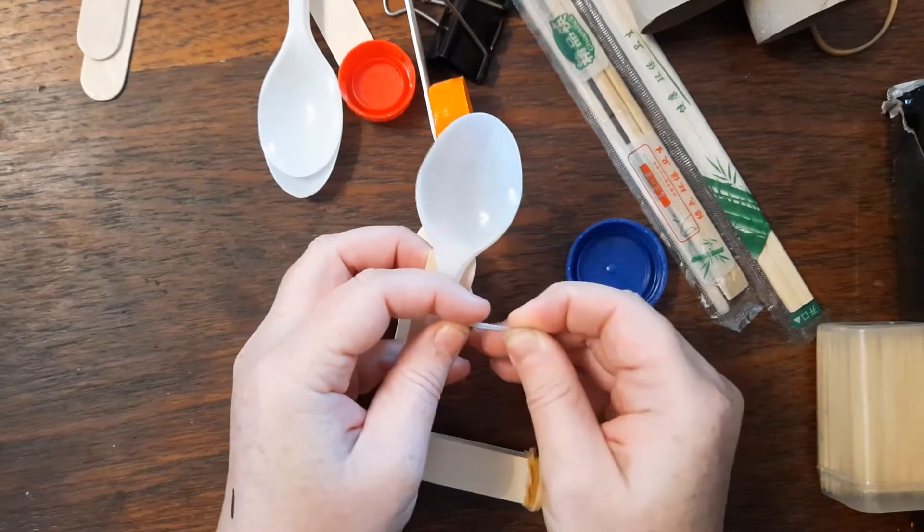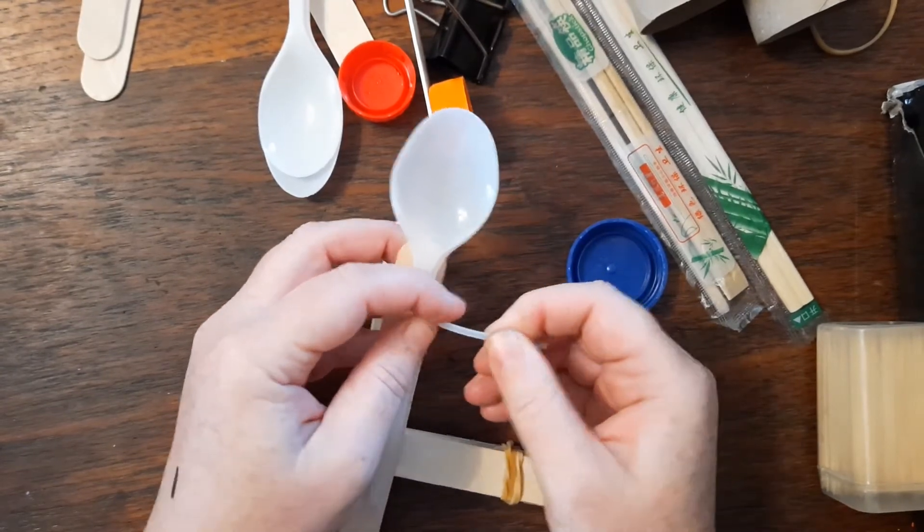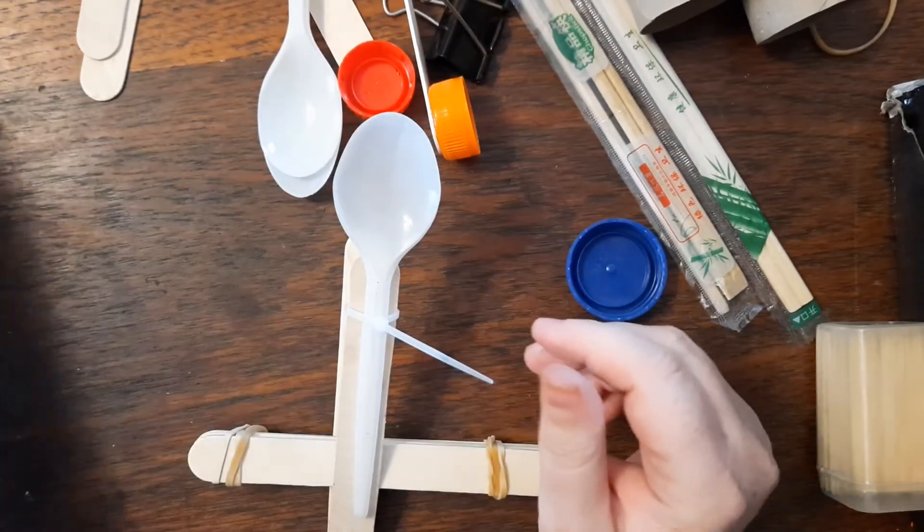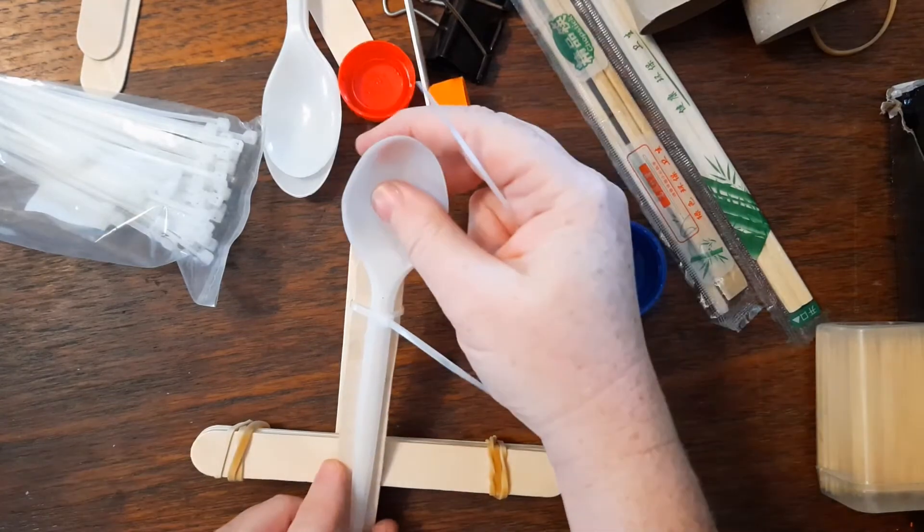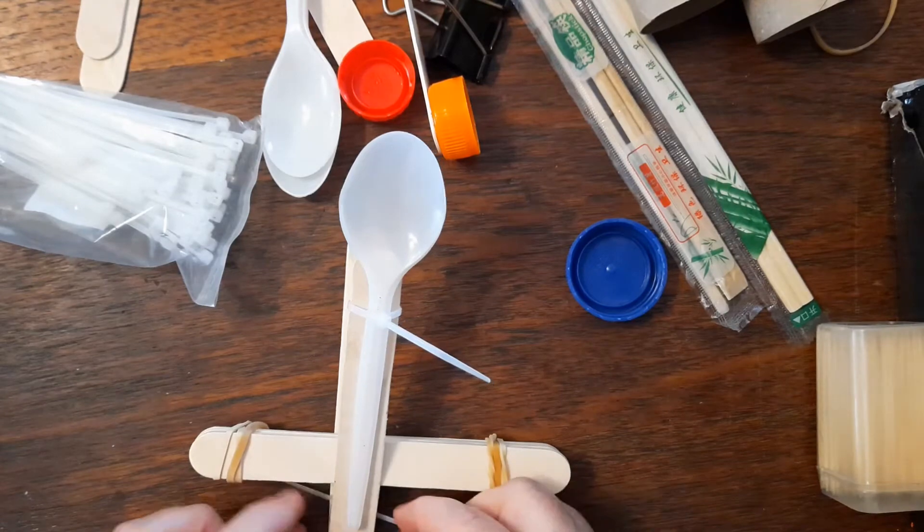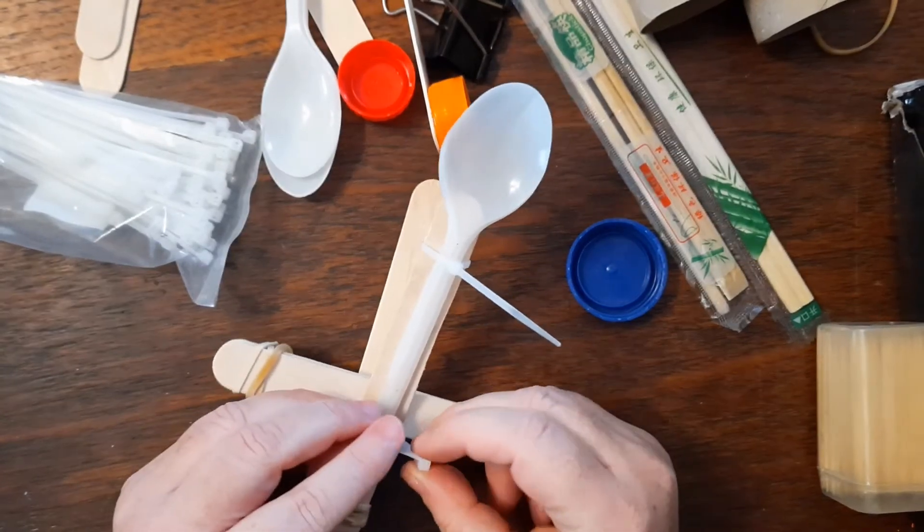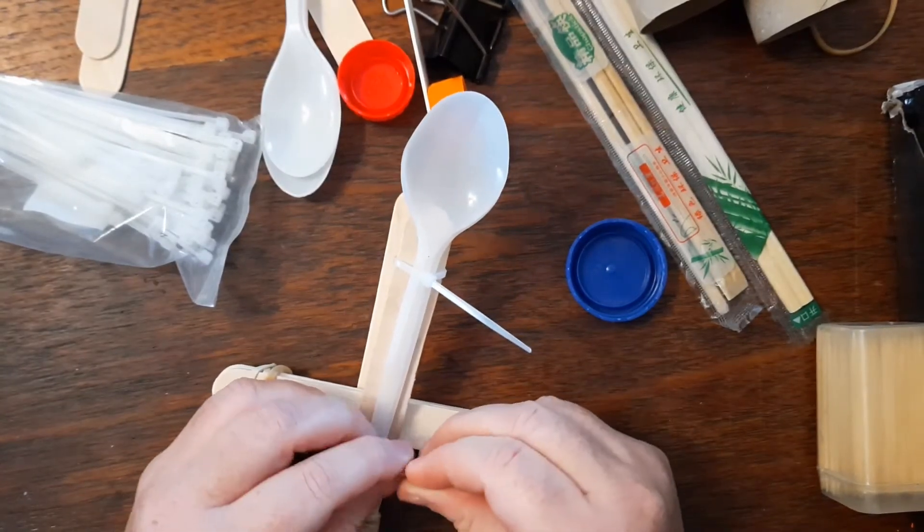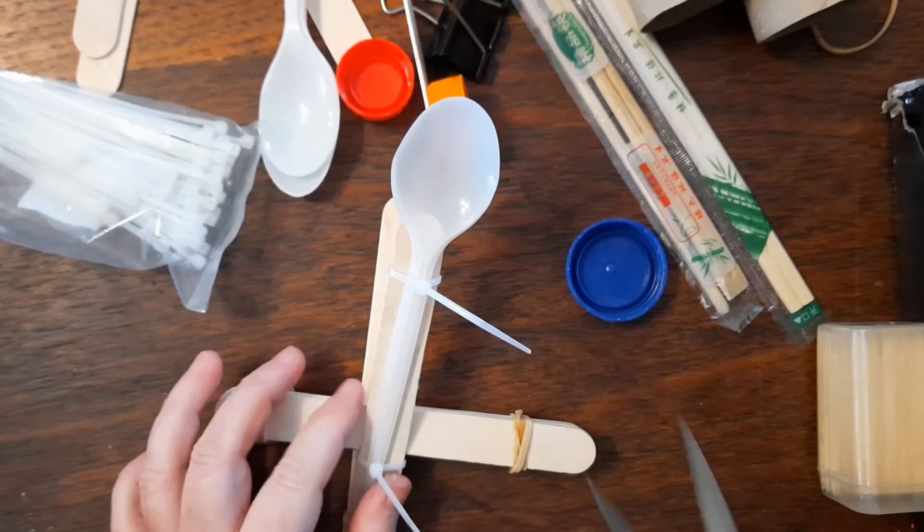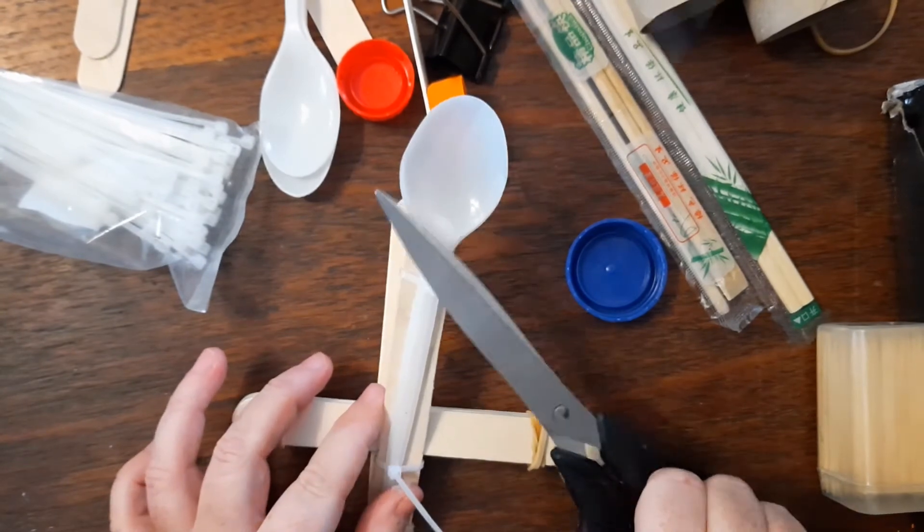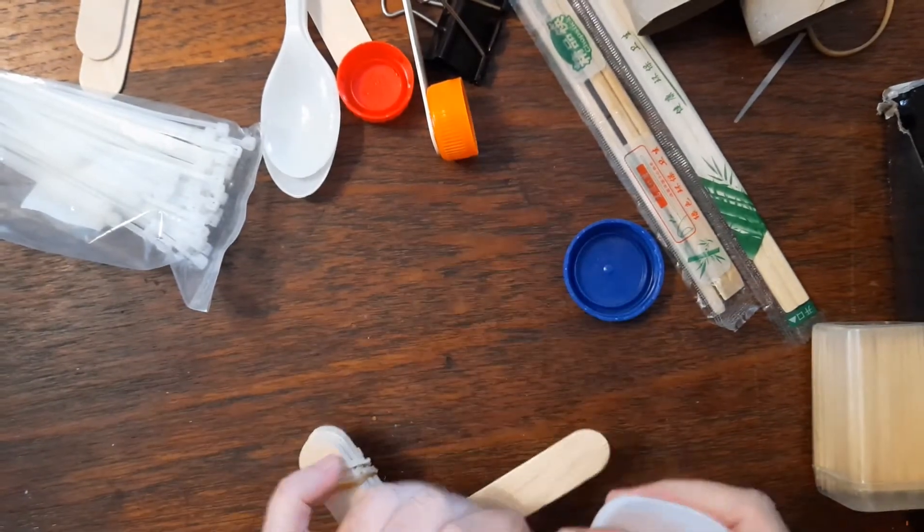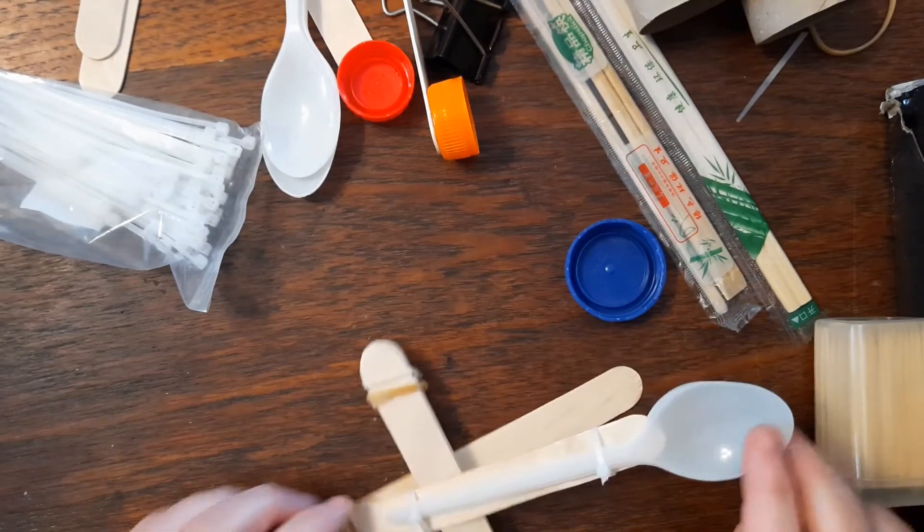So how this catapult works is we are taking elastic potential energy. When we pull the spoon down and extend the elastic bands, we are loading it full of elastic potential energy. When the spoon is released, the elastic potential energy will become kinetic energy. The word kinetic means moving. So the potential energy, which is stored or kept energy, becomes kinetic energy.